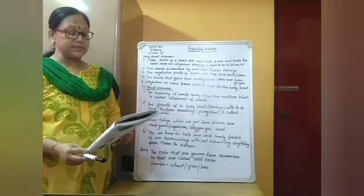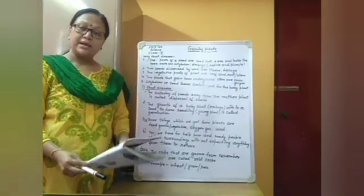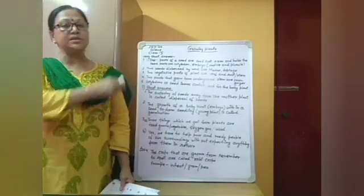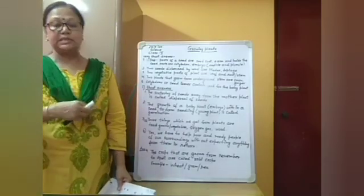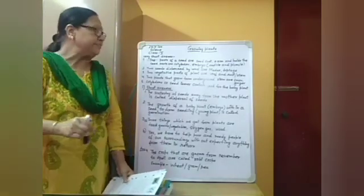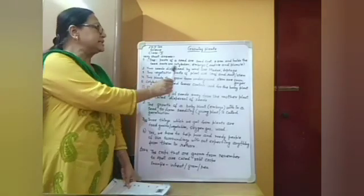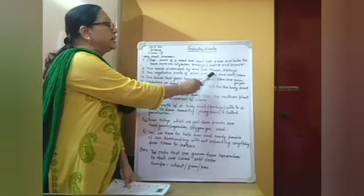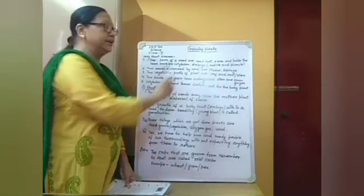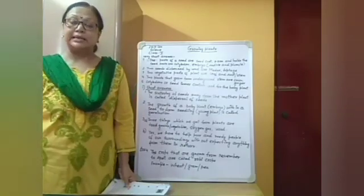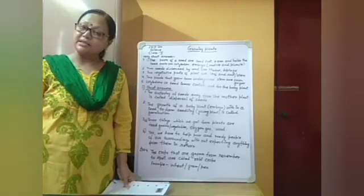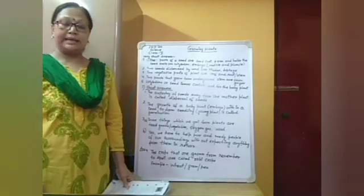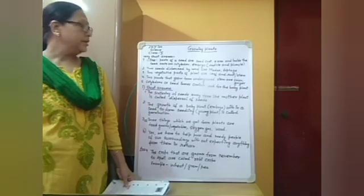Second question: name two seeds that are dispersed by wind. We know that very light, winged seeds can be dispersed by wind. The two seeds dispersed by wind are madar and hiptage. Hiptage has wings, so it can easily be carried by the wind.